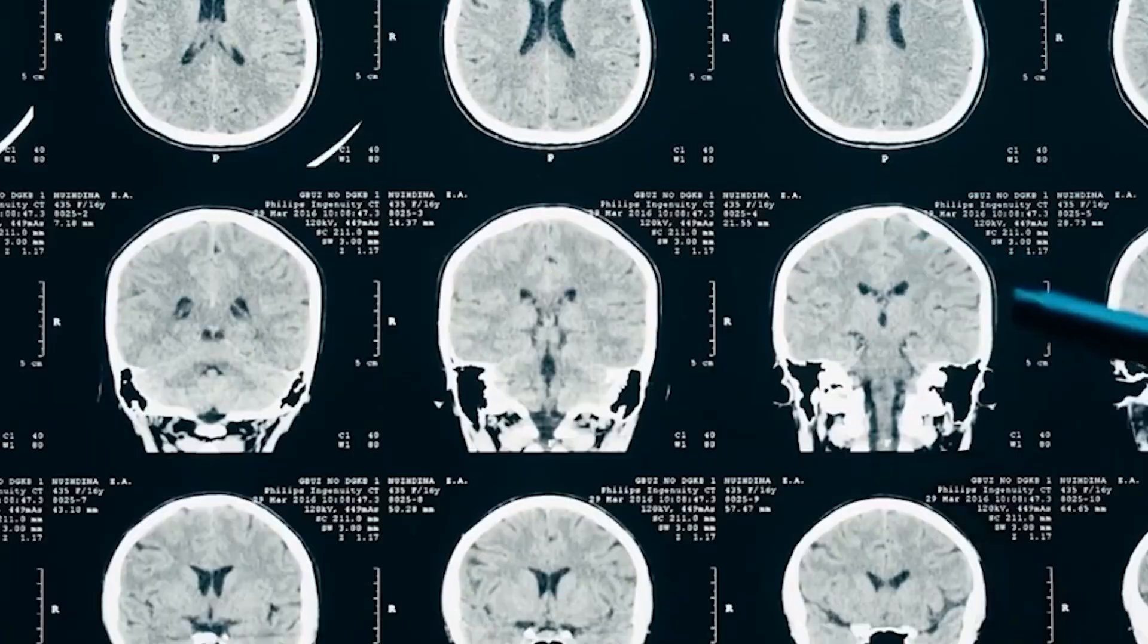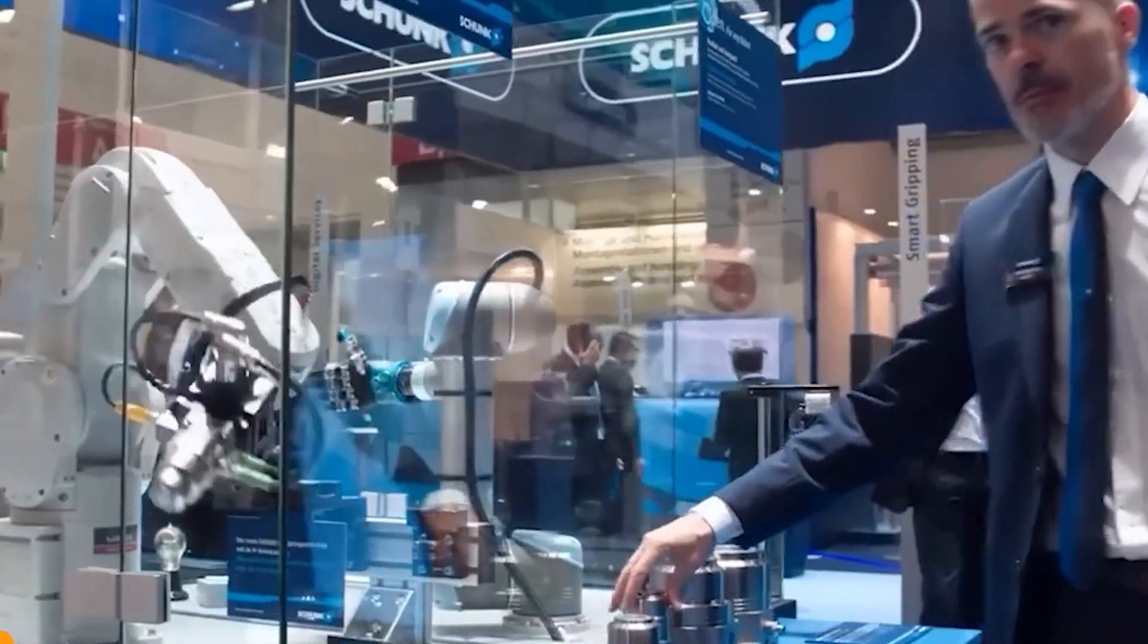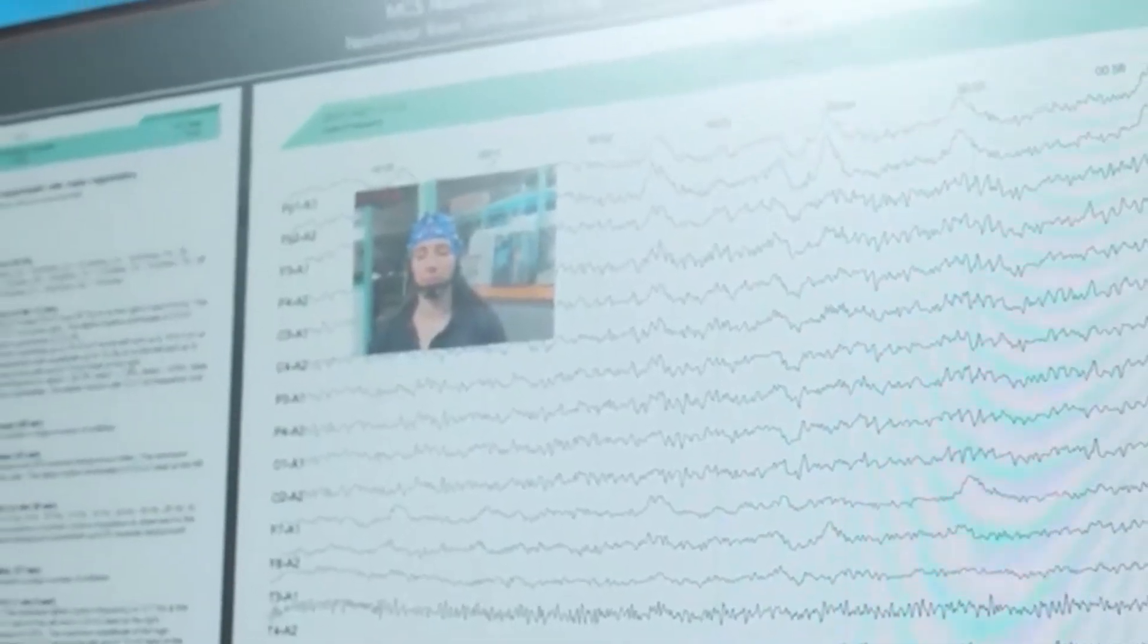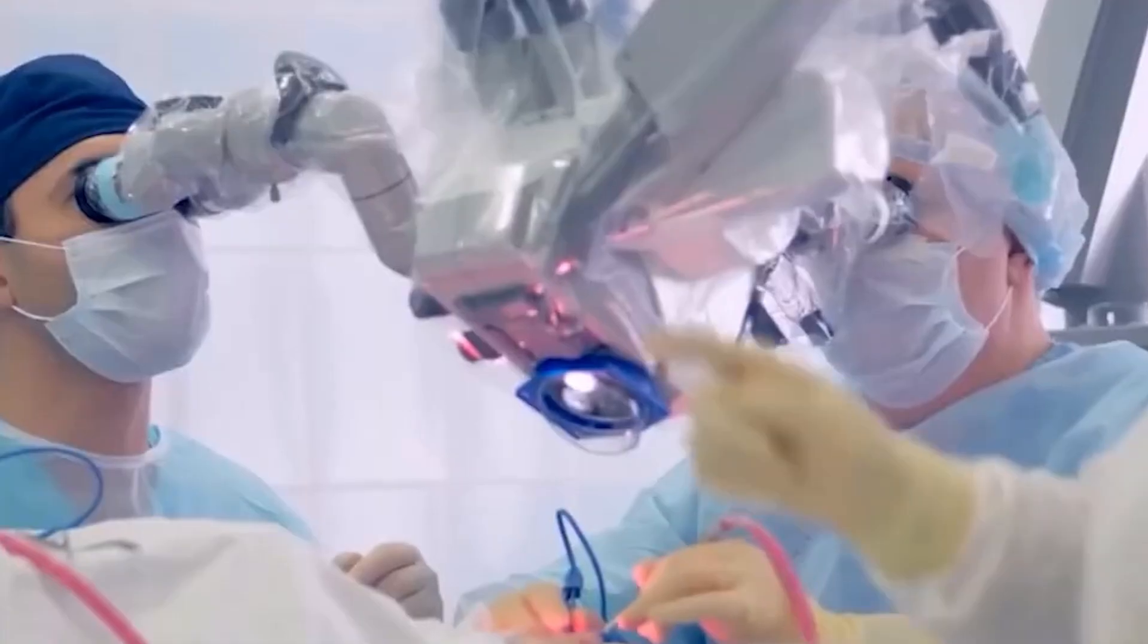The goal is to begin human trials, focusing initially on patients with severe spinal cord injuries. Elon Musk envisions that this technology will not only treat neurological disorders but eventually lead to a symbiosis with AI, allowing humans to keep up with rapidly advancing artificial intelligence.